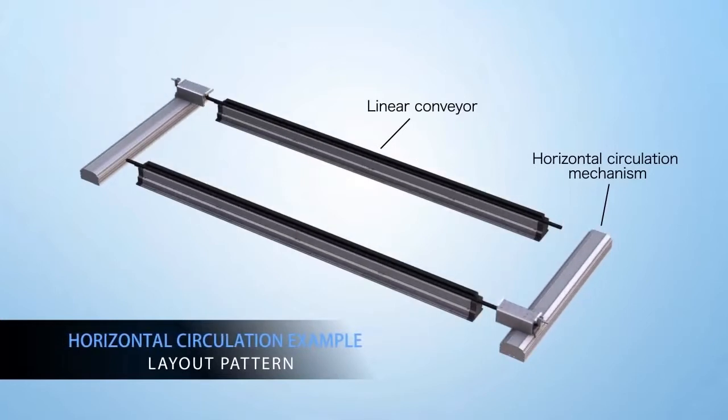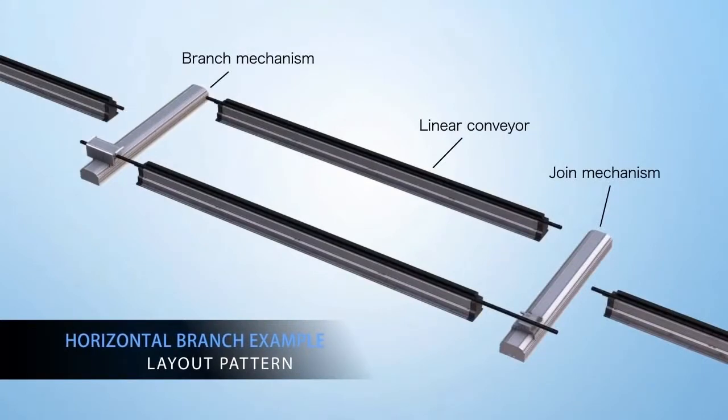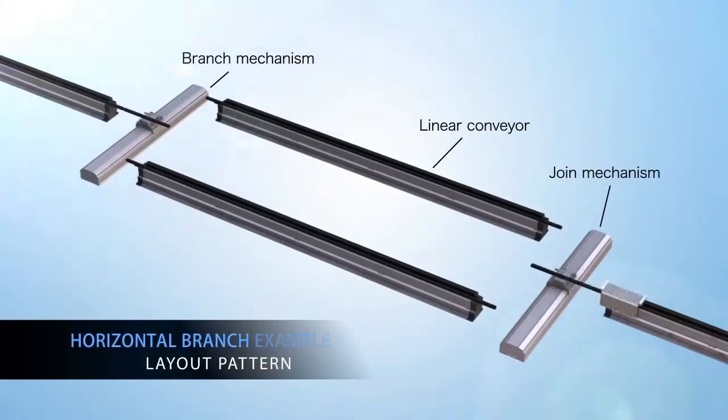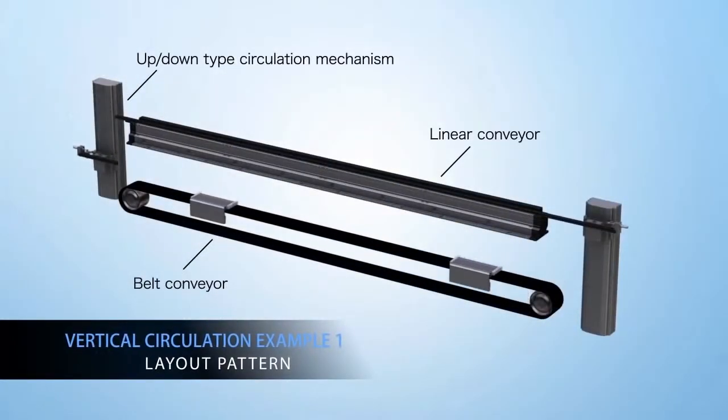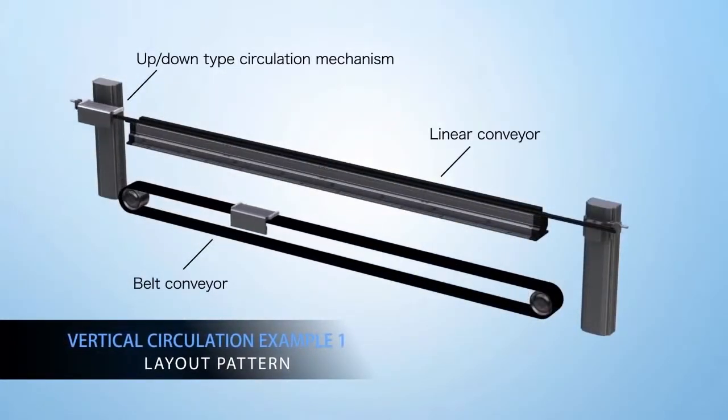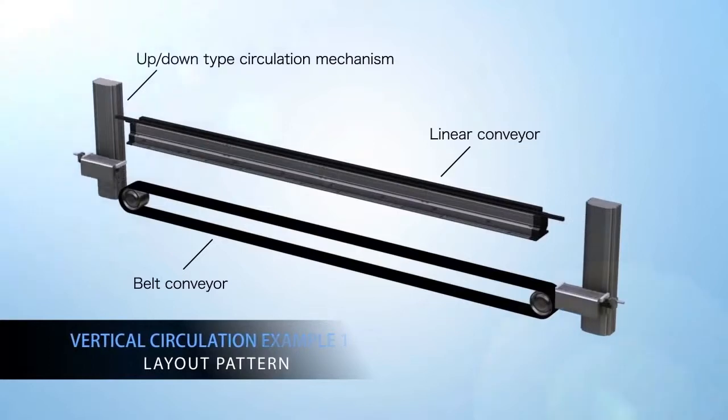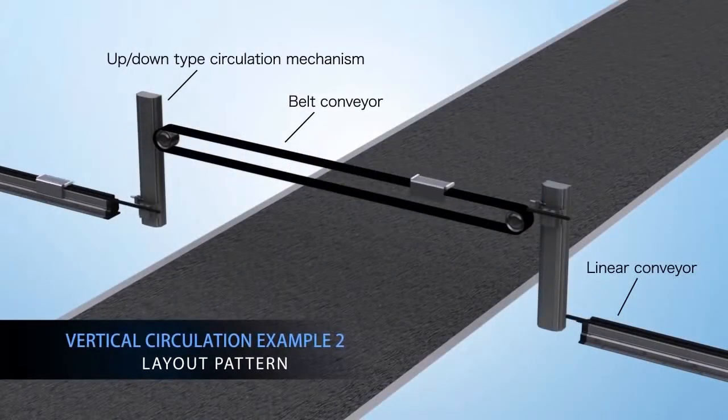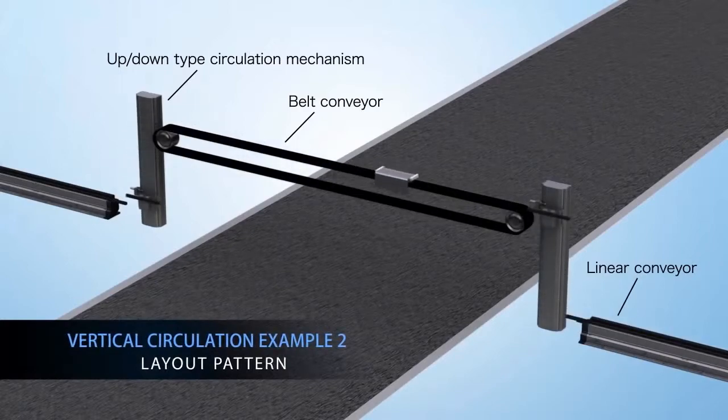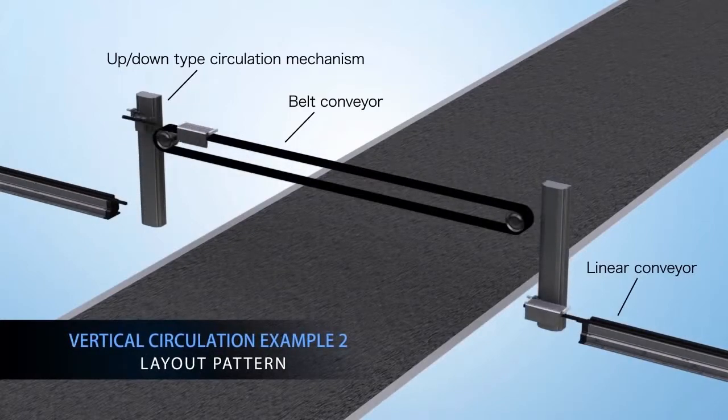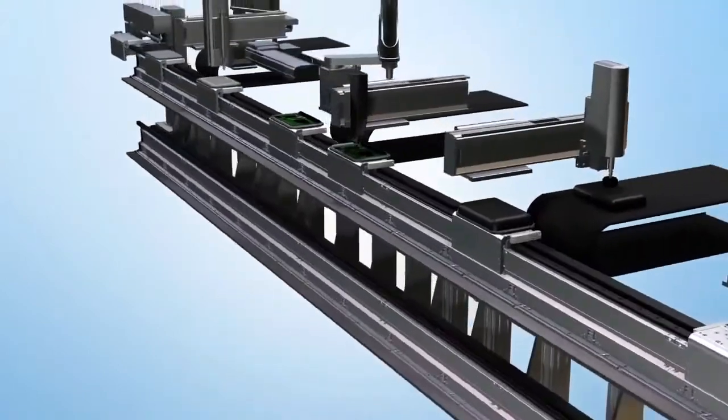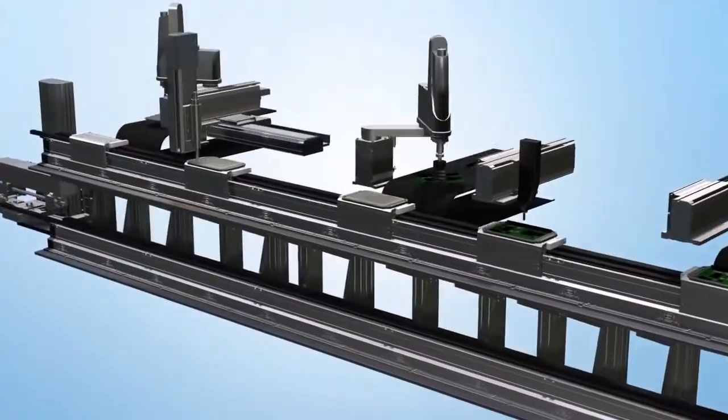Using the Return Unit Module, a line can be looped horizontally or vertically. Let's look at features and application examples.